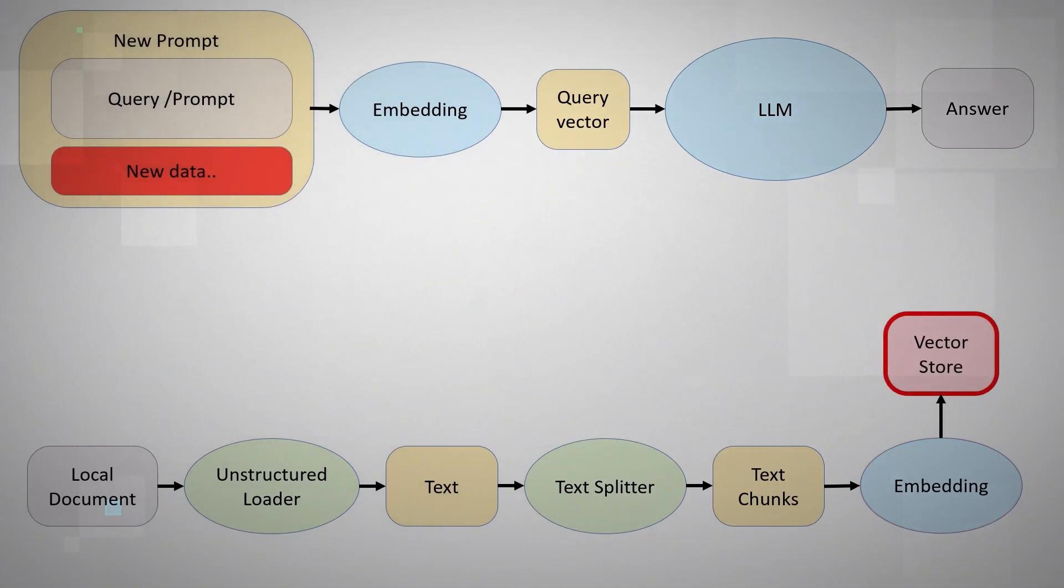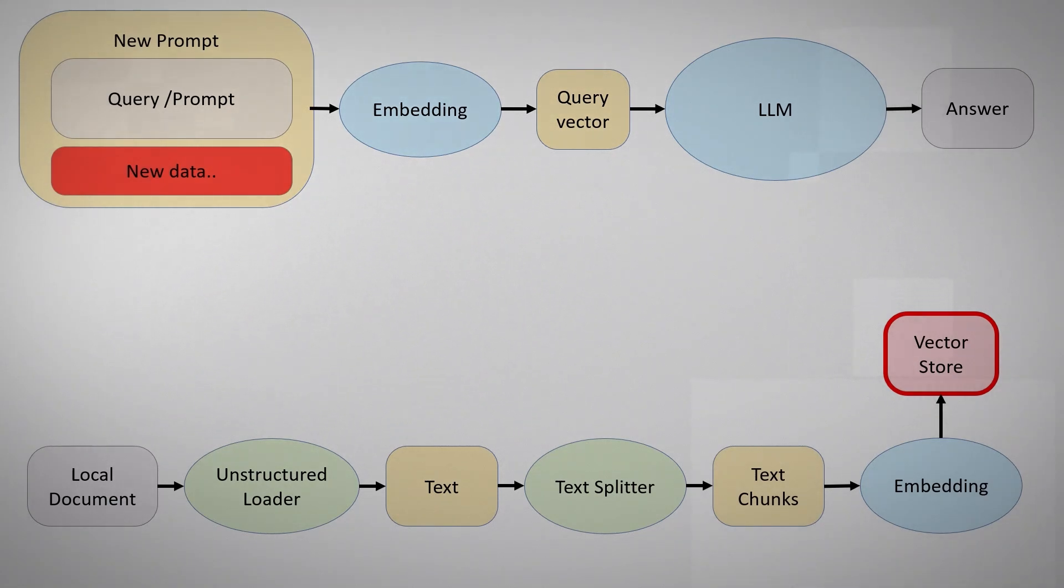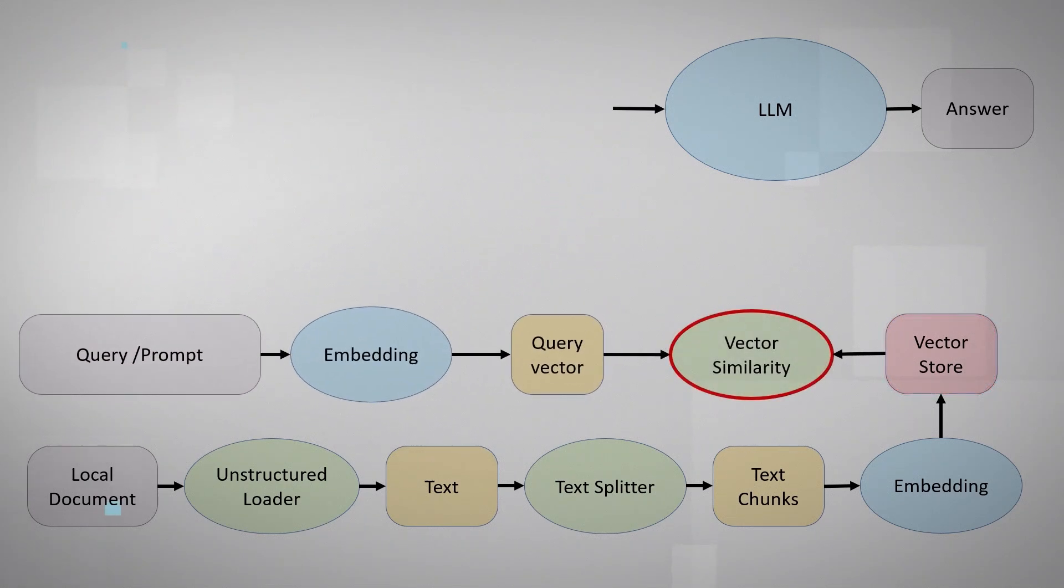Now, we have two sets of vectors. The original query vector and the new knowledge stored in a vector store. Before we add any chunk of new information to the prompt,